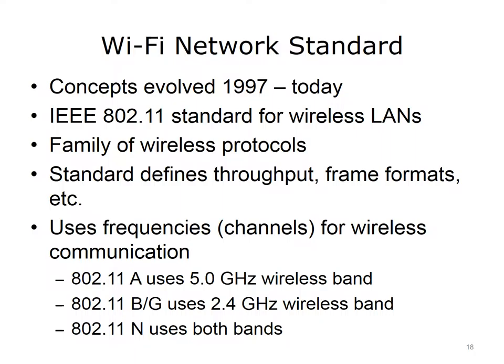802.11 A uses the 5.0 GHz wireless band. 802.11 B and G both use the 2.4 GHz band, which operates in the same range as microwaves and older telephones. A user communicating wirelessly at home while running a microwave would experience interference — the microwave consumes wireless bandwidth, causing wireless communication to function poorly or not at all. 802.11 N, on the other hand, uses both 5.0 and 2.4 GHz frequencies, which is why it is much faster than 802.11 A, B, or G.